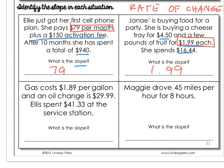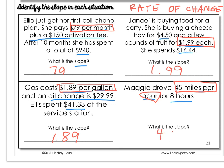Next example: gas costs $1.89 per gallon and an oil change is $29.99. Ella spent $41.33 at this service station. What is the slope or the rate of change? I'm looking for $1.89 per gallon. Last scenario: Maggie drove 45 miles per hour for eight hours. What is the slope or the rate? 45 miles per hour — the slope is 45.